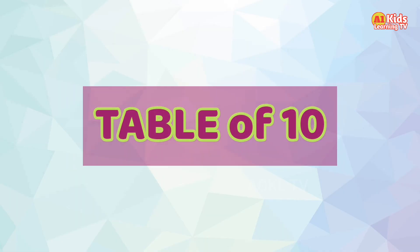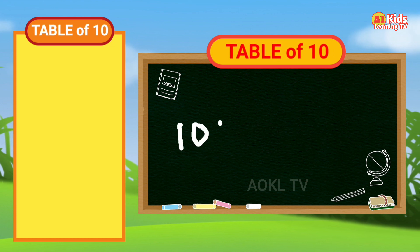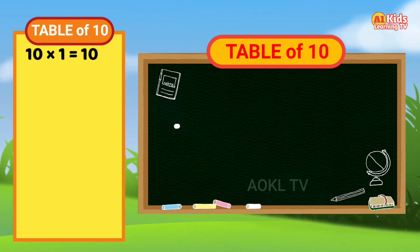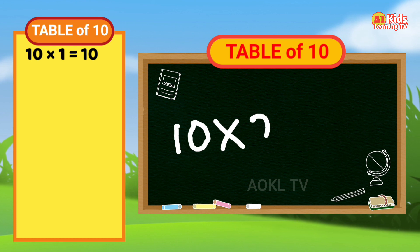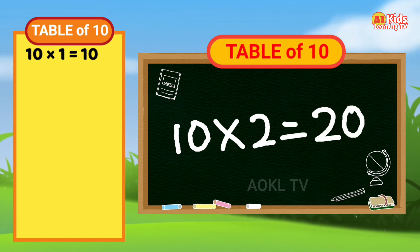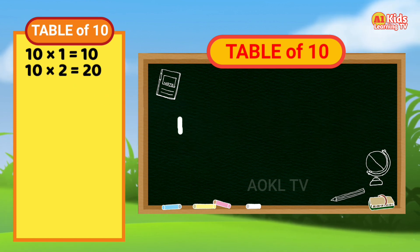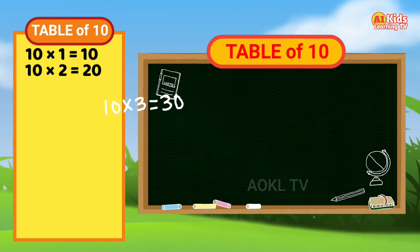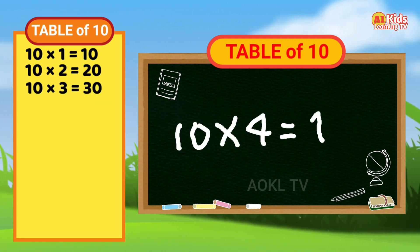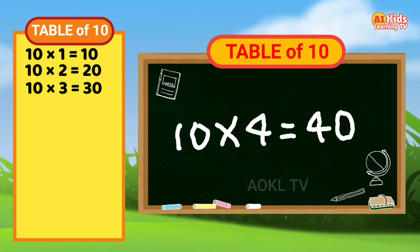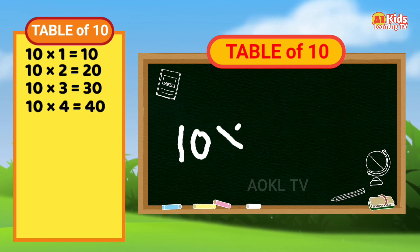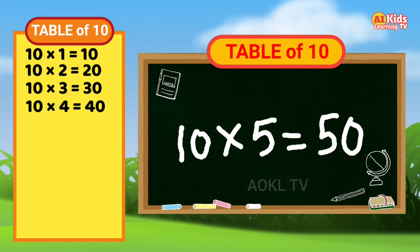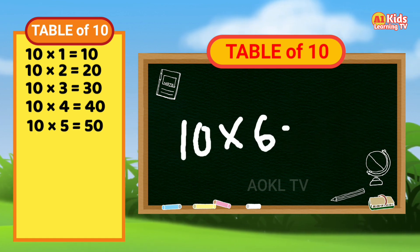Table of ten. Ten one's are ten. Ten two's are twenty. Ten three's are thirty. Ten four's are forty. Ten five's are fifty.